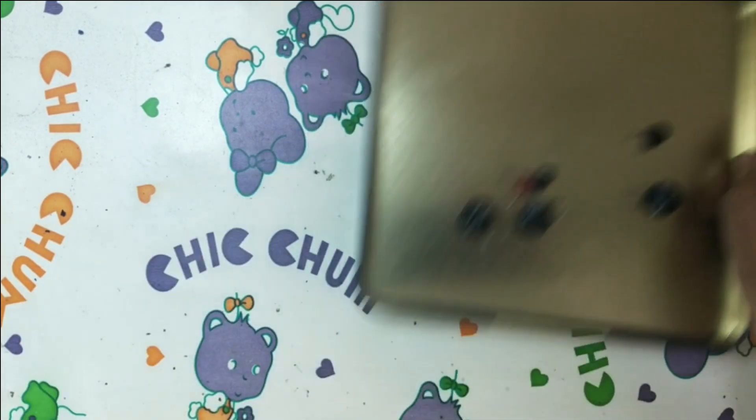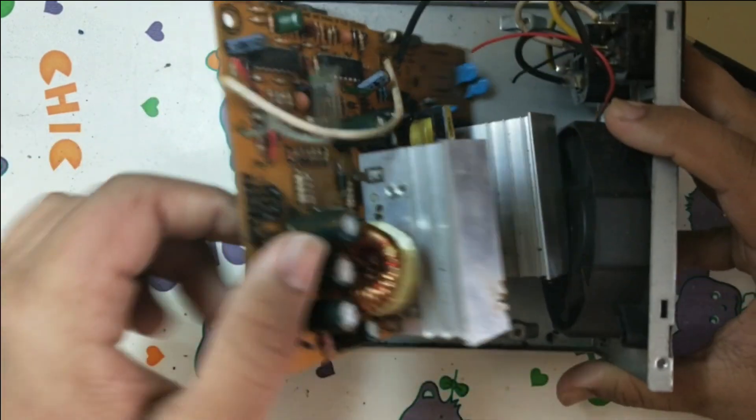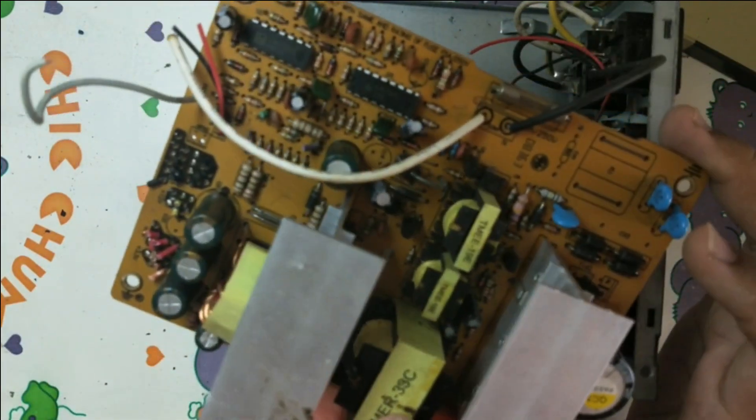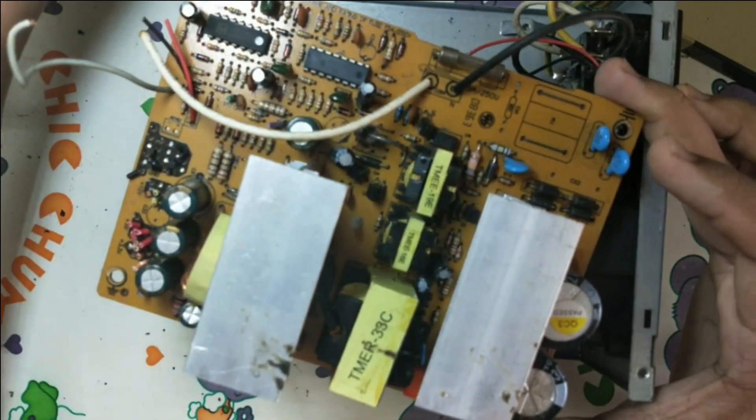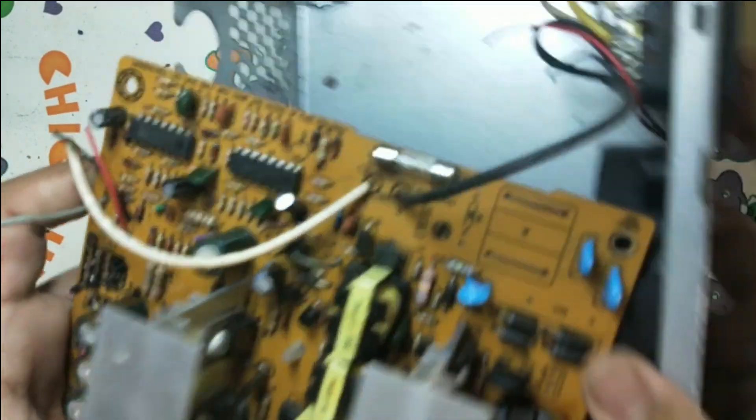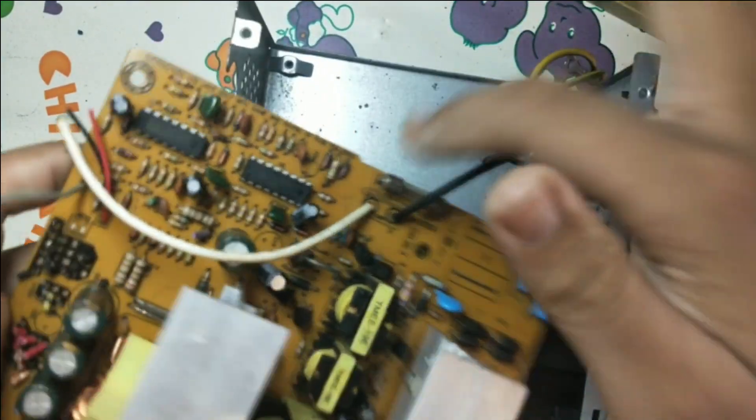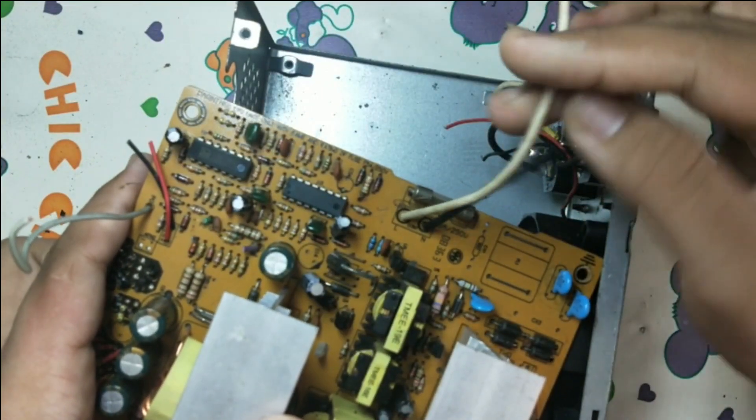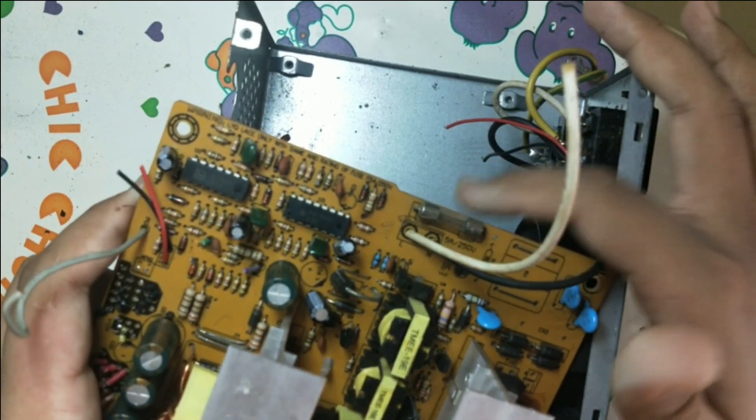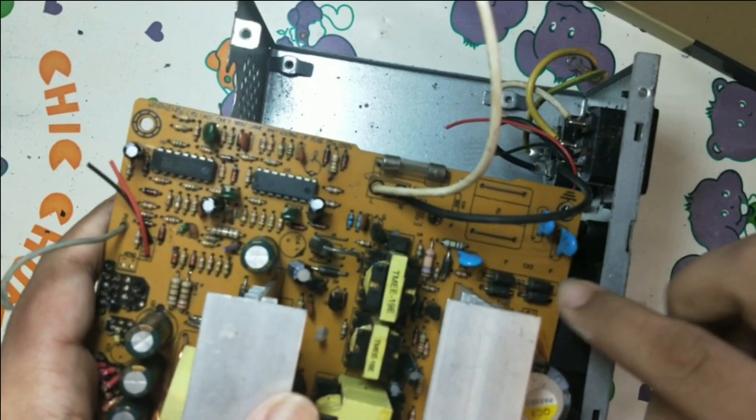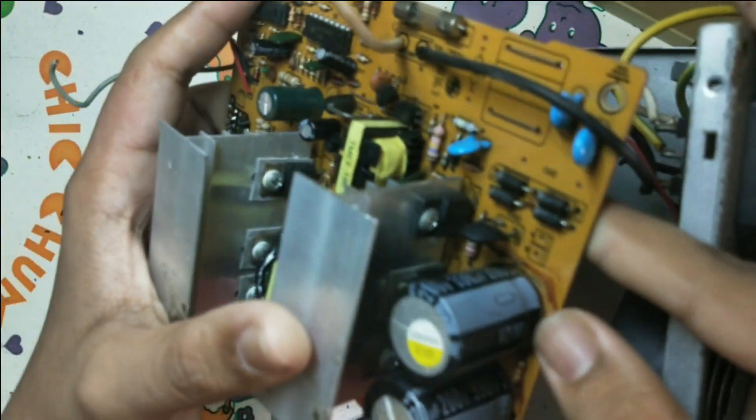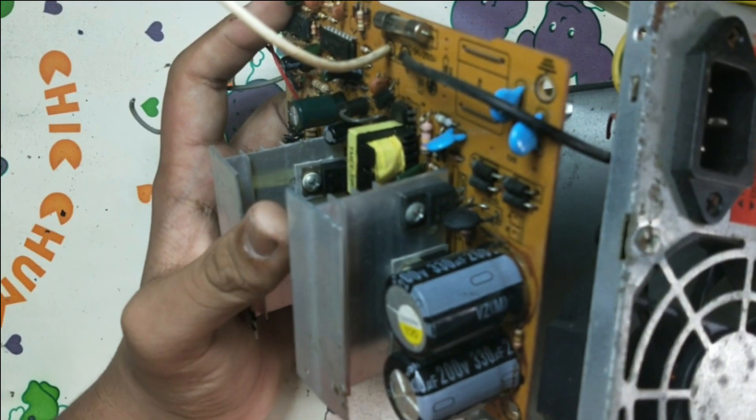I have an SMPS circuit over here. Here's the circuit - the main power supply comes from this side through this cable. The live wire goes through the fuse, then to some capacitors, then to the full bridge rectifier. After that it comes into this black thing.